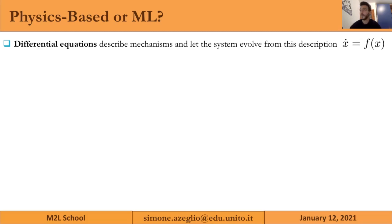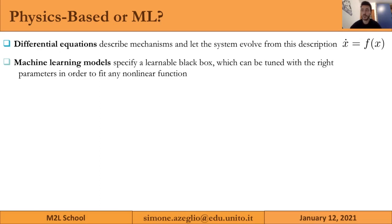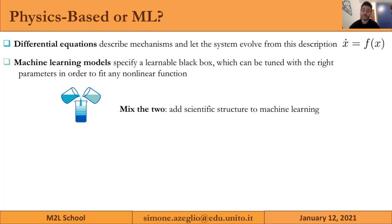Here is a differential equation system. On the other side, in machine learning, we can specify a learnable black box where, with the right parameters, we can fit any nonlinear function. Which one is better? Well, neither — both have strengths and weaknesses. But we can mix the two and actually get something very useful.